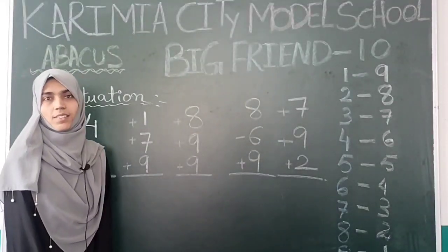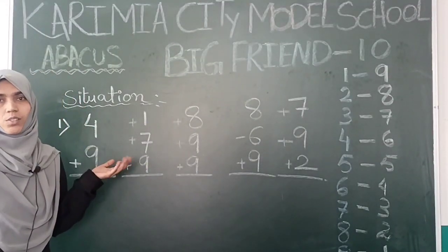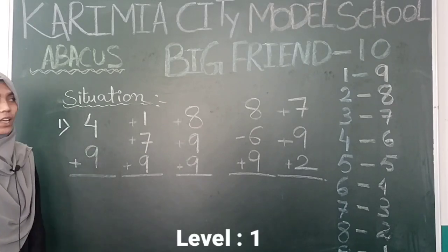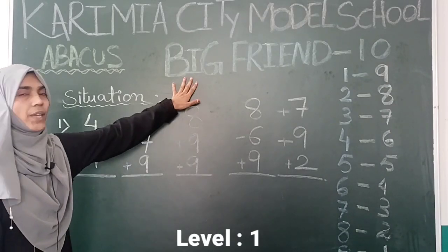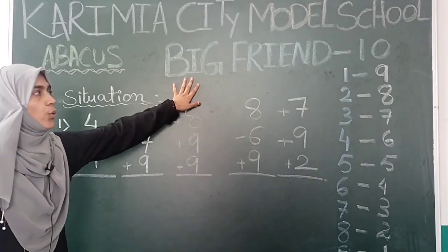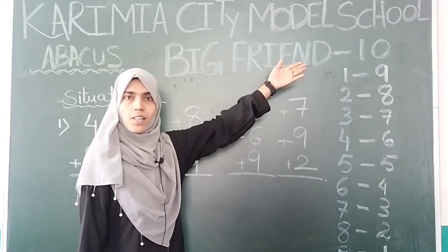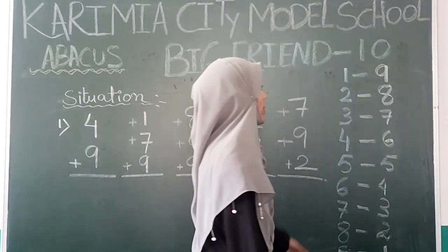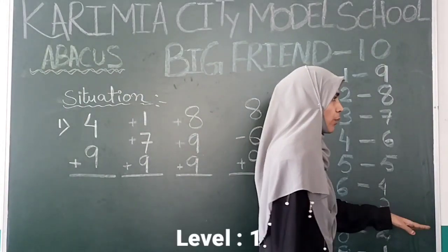Good morning children, welcome to Kareemya City Model School. I am your abacus teacher and today we will learn about Big Friend. Who is Big Friend? Big Friend is number 10, which is the common friend of all numbers.